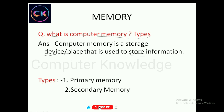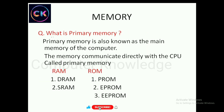Next, let's look at the types of memory. There are two types: first is primary memory, second is secondary memory. Now let's see in detail. Primary memory is also known as main memory. The memory communicates directly with the CPU — it is called primary memory.